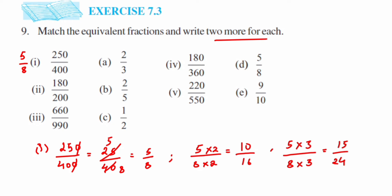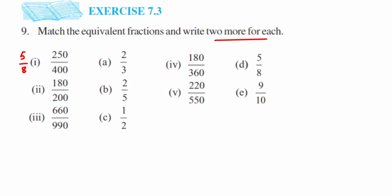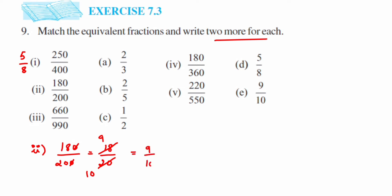Moving on to the second question: 180 upon 200. We're going to reduce it to simplest form. We can cancel the zeros first, leaving 18 upon 20. This is divisible by 2, so we cancel: 2 nines are 18 and 2 tens are 20, giving 9 upon 10. We cannot cancel further, so 9/10 is the simplest form.